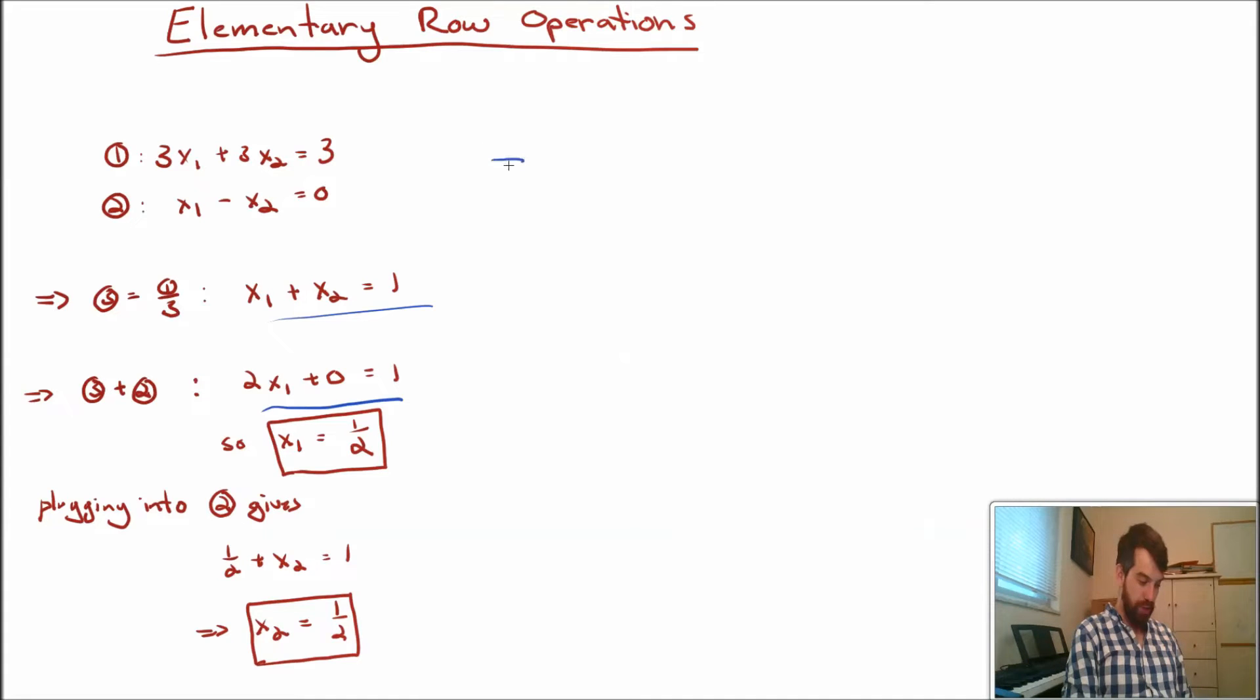So what we've seen previously is that I can translate this system into this augmented matrix: 3, 3, 3, 1, minus 1, 0. And I'm going to put the dots to separate the coefficients on the left from the constant on the right.